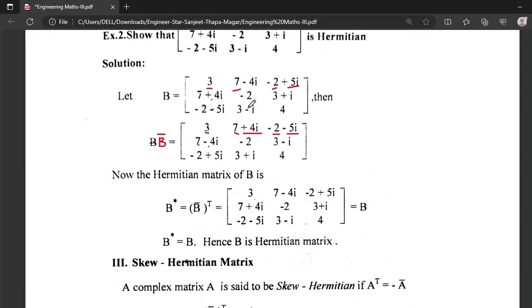Plus will be minus, this as it is, and three also as it is. Plus i will be minus i. And this remains the same, minus 5i changes, minus 2 plus, and this remains as it is.